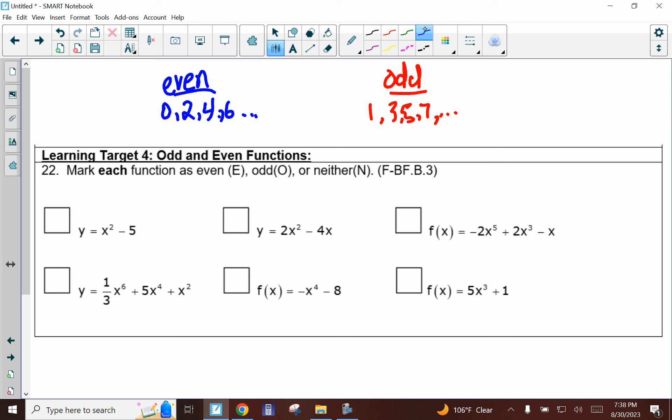Now when you look at your exponents, if they are all even, then it's even. If they are all odds, then it's odd. And if you have a mixture of even and odd, then it's going to be neither. Now the only catch to this is you got to make sure that everything has an x.